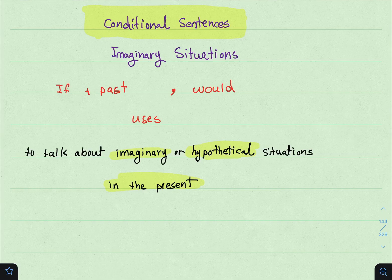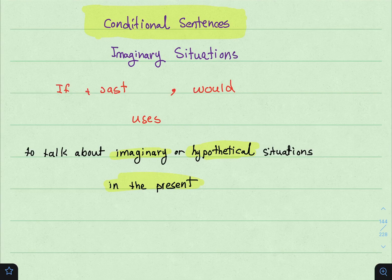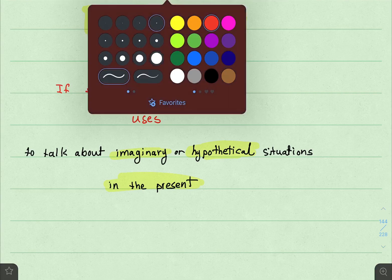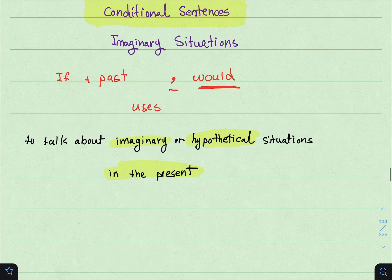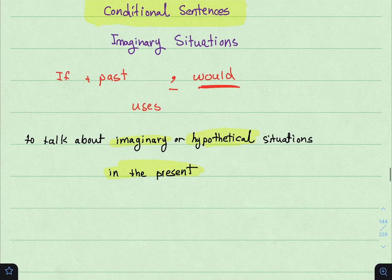So if you want to talk about imaginary or hypothetical situations in the present — إذا أنت تريد تتكلم عن موقف خيالي أو افتراضي في الحاضر — بإمكانك تستخدم الـ if-conditional sentence. القاعدة تقول: if + past — يعني هنا بعد if يكون simple past. وفي المين كلوز يكون would.